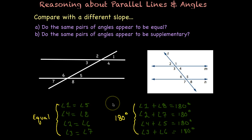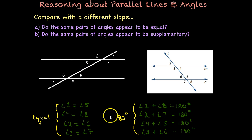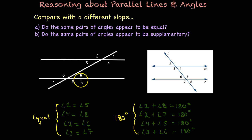Let's make sure we're not just coming up with examples based on one sketch. Here I have another sketch of parallel lines with the transversal with a different slope — notice it's much steeper. The goal is to determine if the same pairs of angles appear to be equal. Looking at our answers from the first sketch: one and five still look the same; four and eight, two and six, three and seven — they still appear to be equal.